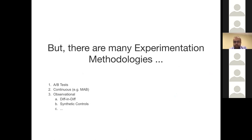There are many experimentation methodologies. A/B testing is definitely the most popular one. There are also other variants of hypothesis testing. Lately, multi-arm bandit has gained a lot of traction — that's an example of continuous testing where you continuously allocate treatment and control as you move forward, making sure your winning group gets more of the treatment. There are also observational techniques such as difference-in-difference, synthetic control — a more complex variant of difference-in-difference — and switchback.